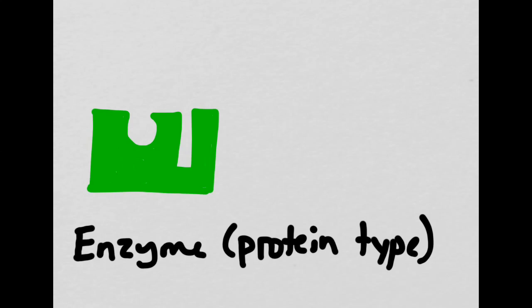Remember this structure from the fall? This structure that we drew way back when represented an enzyme, which is a type of protein. Notice that it has a very specific shape. If the goal of this enzyme is to put together these two substrates, like this, it must have this exact shape in order for the substrates to fit nicely.